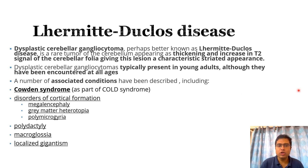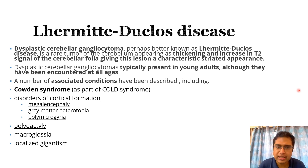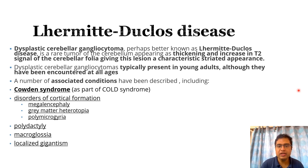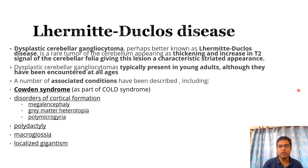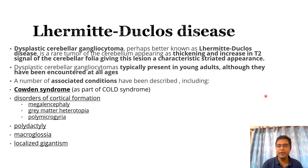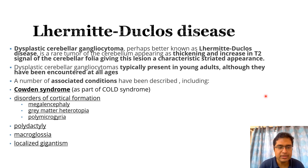Dysplastic cerebellar gangliocytoma, better known as Lhermitte-Duclos disease, is a rare tumor of the cerebellum appearing as thickening and increased T2 signal of the cerebellar folia, giving the lesion a characteristic striated or tigroid appearance. It typically presents in young adults, although it can occur at all ages. The most important associated condition is Cowden syndrome — when associated, it is called COLD syndrome (Cowden-Lhermitte-Duclos disease syndrome). Disorders of cortical malformation are also associated with this disease.